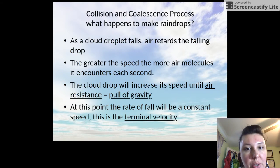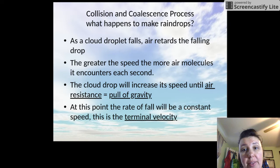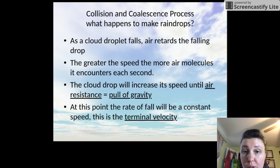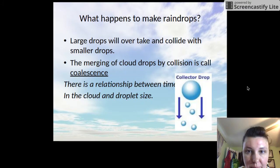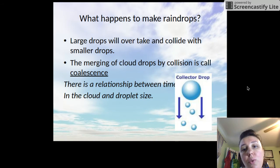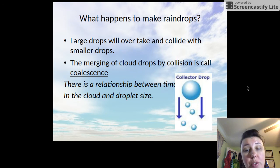Looking at those terms again: cloud droplets fall, air retards the falling droplets, and the greater the speed, the more air molecules encountered each second. The cloud droplet increases its speed until air resistance equals the pull of gravity — that is terminal velocity, the maximum constant rate of fall. Large droplets will overtake and merge with smaller droplets as they fall; this is the collision coalescence process.